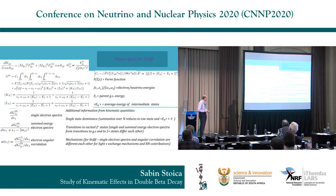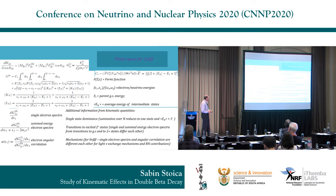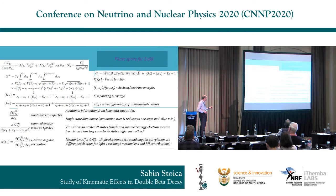Besides the phase-space factors, there are single-electron spectra, summed-energy electron spectra, and electron angular correlation that can be derived from these phase-space factors. These are important in double beta decay studies because they can give additional information. For instance, we can see whether a single dominant state approximation is valid, and we can distinguish between transitions to excited 2+ states versus ground state transitions. One can also distinguish between mechanisms for neutrinoless double beta decay by looking at these kinematic quantities.